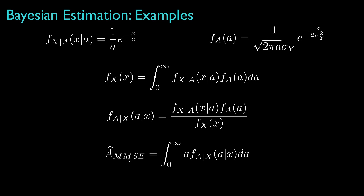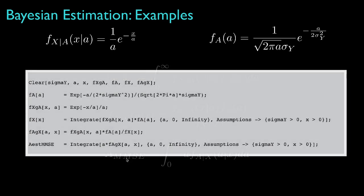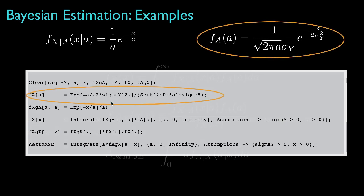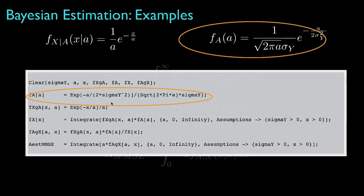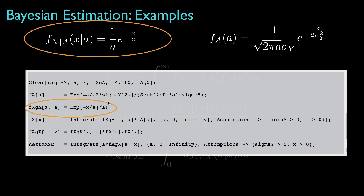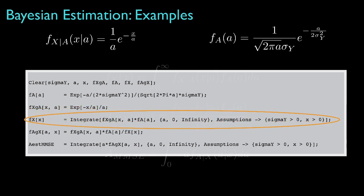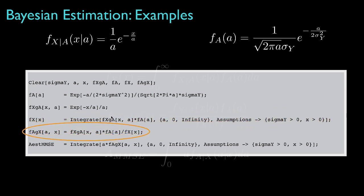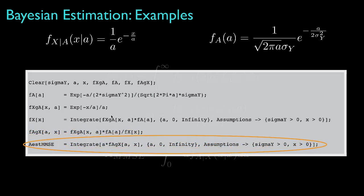To address this example, I've chosen to use Mathematica, and I'll show you the segment of code that I used. After clearing the variables, first I set up the function that defines the prior density. Then I set up the conditional observation density. Then I perform the integral to evaluate the unconditional observation density. Then I specify the posterior density from those functions, and finally evaluate the conditional mean of the posterior density, which defines the minimum mean square error estimator.